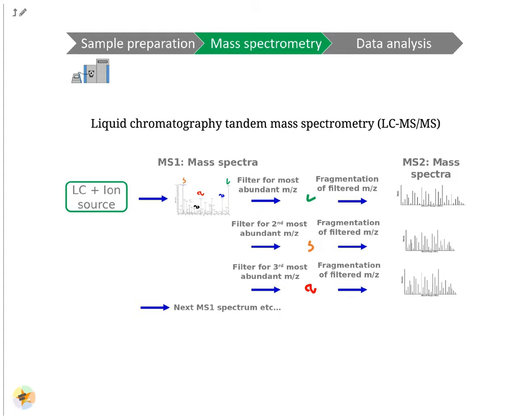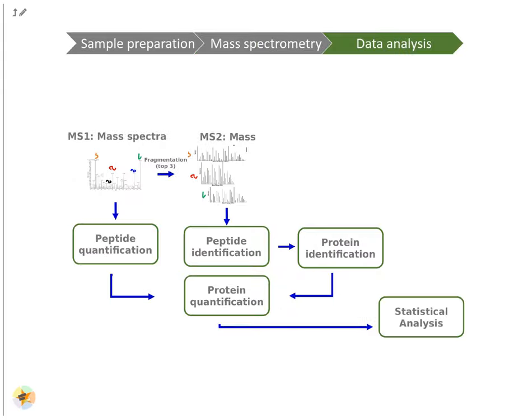The filter unit of the MS — a quadrupole — allows only the top N peptides to pass. One after the other is selected in the filter unit and then fragmented by collision with neutral gas molecules. This fragmentation breaks the peptide bonds and generates peptide fragments. The peptide fragments are measured again via the mass analyzer and detector; these spectra are called MS2 spectra. After all top N peptides are fragmented and measured, another full MS1 spectrum is acquired. MS1 and MS2 spectra are acquired in this way during the elution of the sample from the LC.